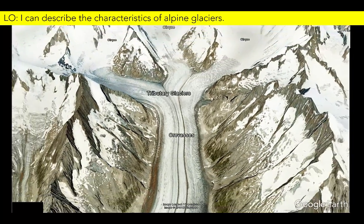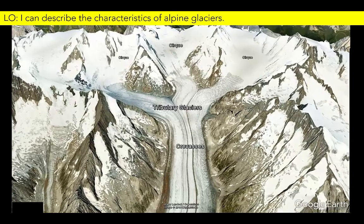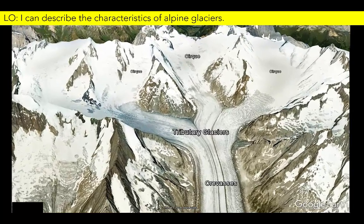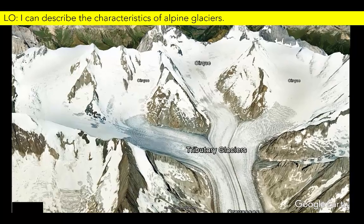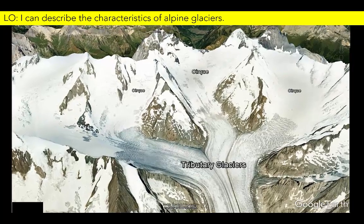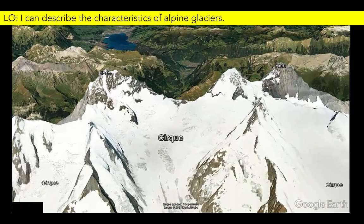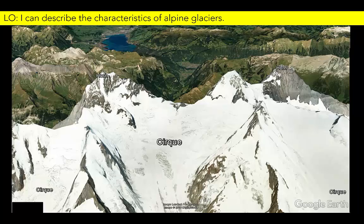Continuing along, we see that the glacier we have been following is actually made up of ice from several smaller tributary glaciers. These smaller glaciers flow out of steep-sided hollows, known as cirques, that form just below the ridge crest and serve as the supply source for the glacier. Notice that unlike the rest of the glacier, the cirques are snow-covered. The overlying ridge is topped by a couple of pointed horn-shaped peaks, characteristic of alpine glacial landforms.